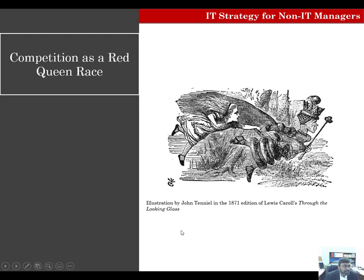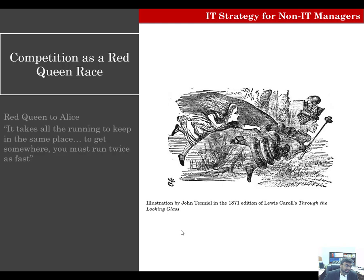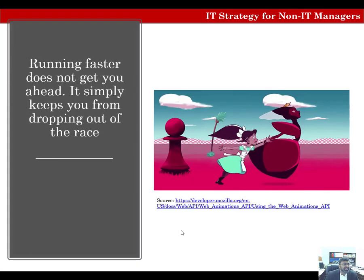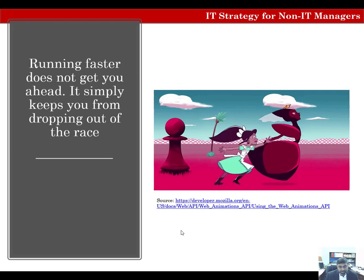Let's think of competition as a Red Queen race. In the book Through the Looking Glass, Lewis Carroll writes about the Red Queen. When Alice asks why she's running so fast, the Red Queen says it takes all the running to keep in the same place — to get somewhere, you must run twice as fast. Using running as an analogy for IT investments, investing the same as your competitors doesn't get you ahead; it keeps you from dropping out of the race.